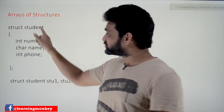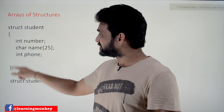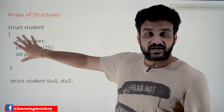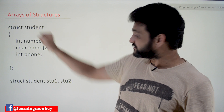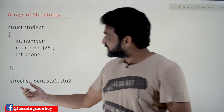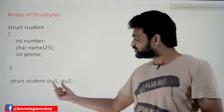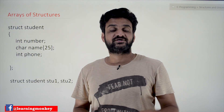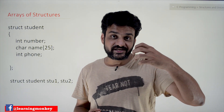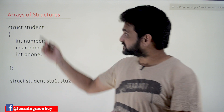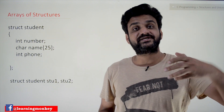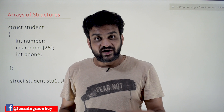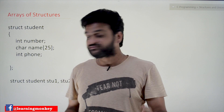We have created a structure called 'student'. This student structure has three member variables: number, name, and phone. These are the data items of this structure, and we have created two variables s1 and s2. Now, if I want to store the details of a hundred students, I need to create a hundred variables.